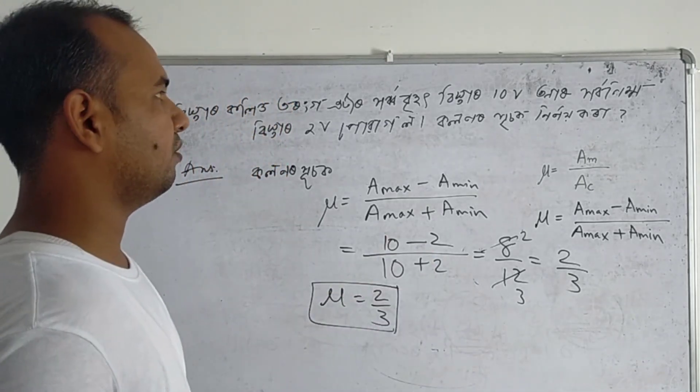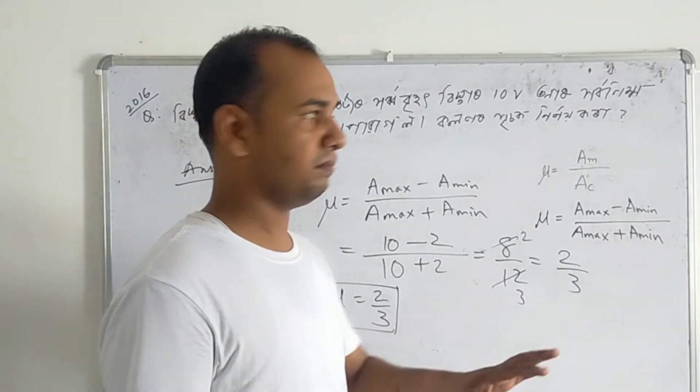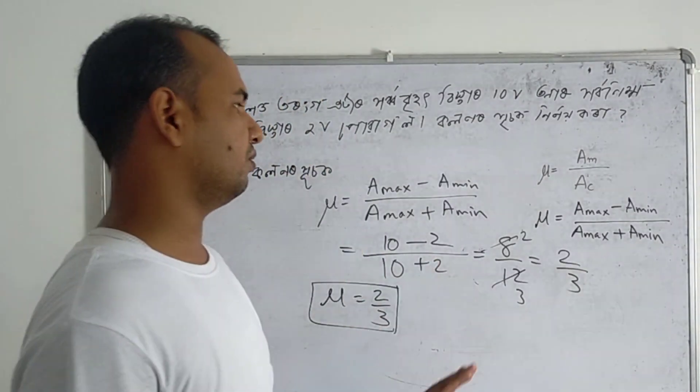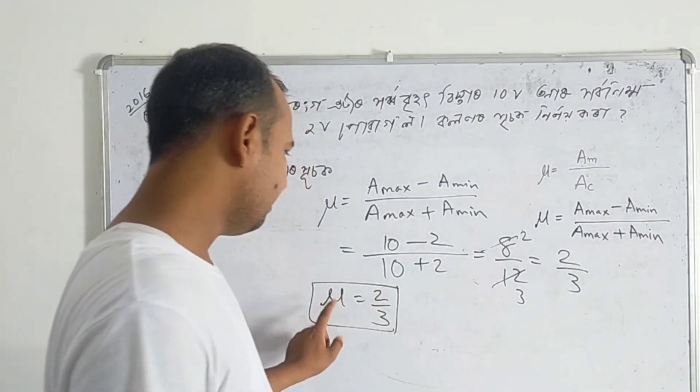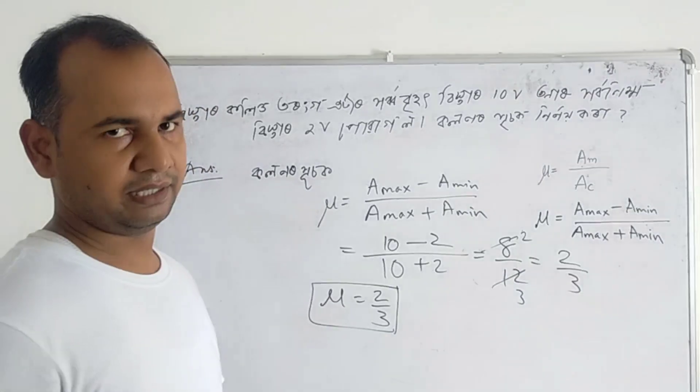So for this question, with 10 volts and 2 volts, the answer is mu equal to two by three.